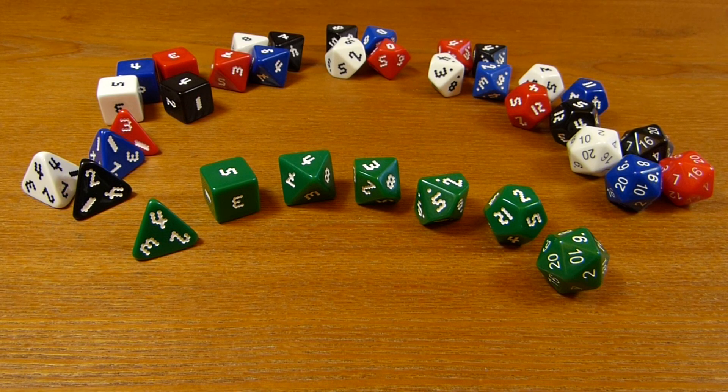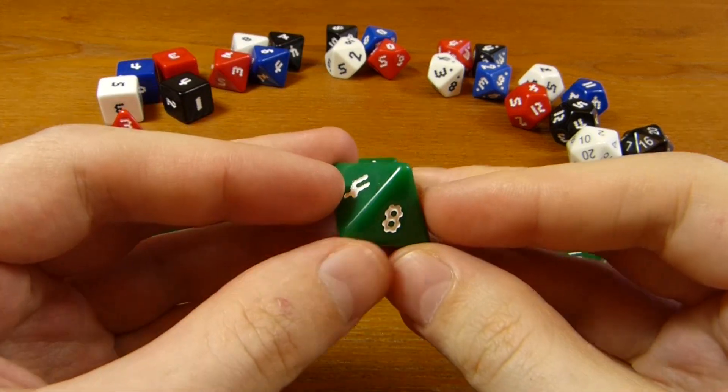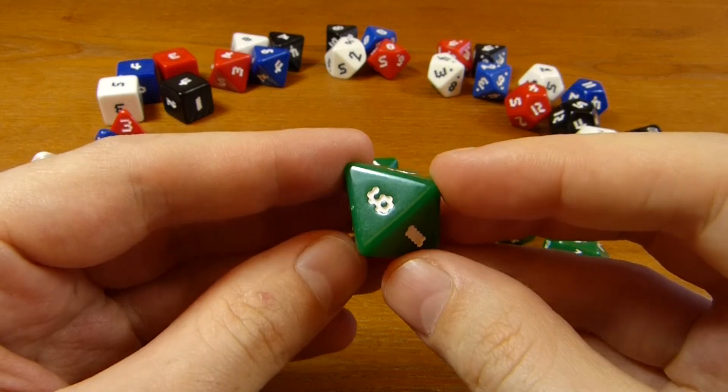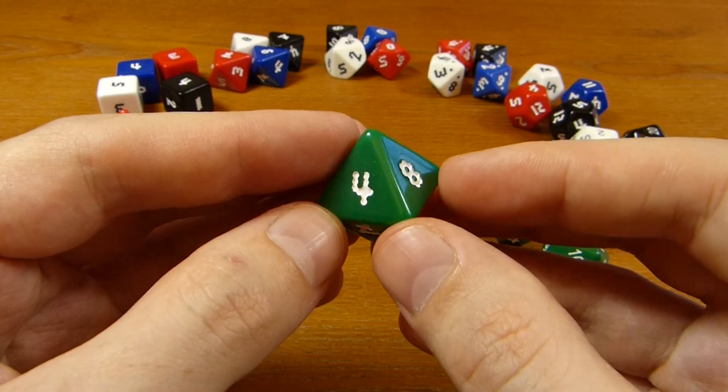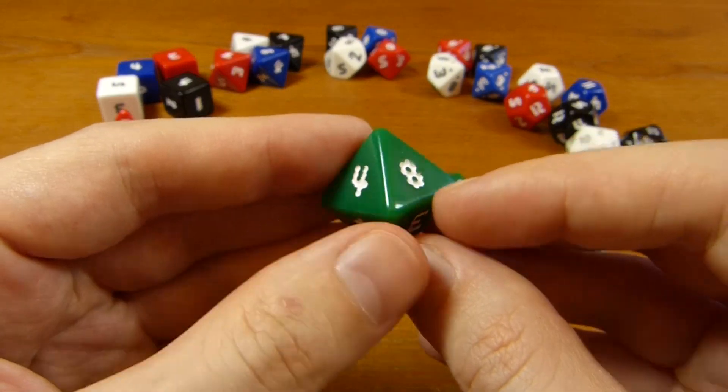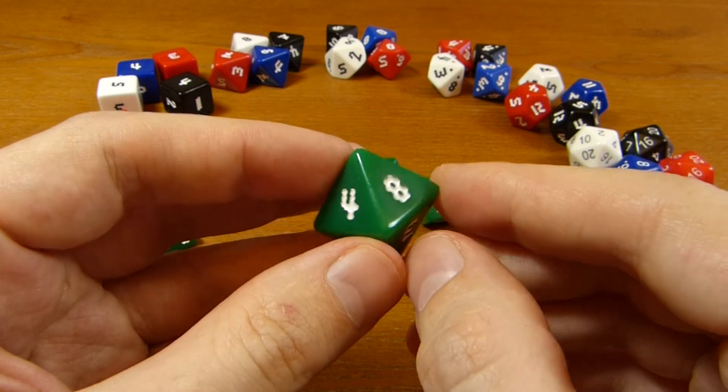Second, our numbering is physically balanced. What do I mean by that? So you'll notice these interesting designs for the numbers. Each number is made from 10 hexagons, all of the same size, and they're positioned on the face so that the center of mass of the design is at the center of the face.